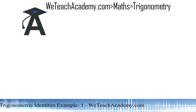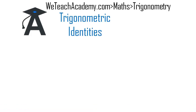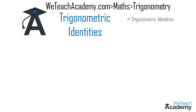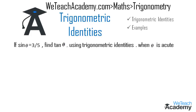Welcome to vteachacademy.com. In this presentation we are going to discuss a few examples on trigonometric identities. In our previous videos we already discussed trigonometric identities and proved whether they are true for all theta values. Here we are going to discuss how to solve examples using these identities. The first example: if sine theta is equal to 3 by 5, find tan theta using trigonometric identities when theta is acute.